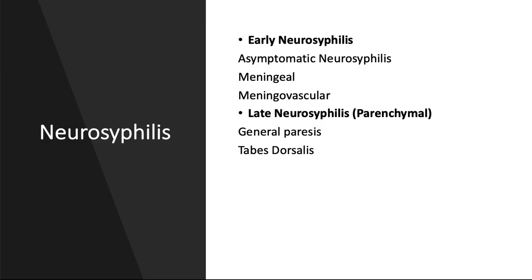While neurosyphilis itself is a complication of syphilis, untreated neurosyphilis can result in devastating neurological sequelae, including permanent paralysis, dementia, and death. Treatment should be initiated immediately, as some complications may be reversible and the success of therapy has an inverse relationship to the duration of untreated infection.